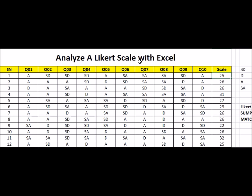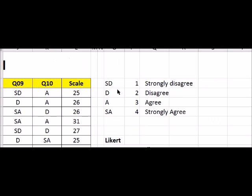Likert scales are psychometric scales where most of the time responses come as strongly disagree, disagree, agree, and strongly agree. Sometimes you can have up to a seven-point scale. This is a four-point scale. You have a five-point scale where you could have a middle option, maybe indifferent, or neither disagree nor agree, and so on and so forth.